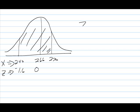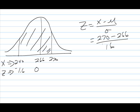So we do need this Z value for 270. So we need to take X minus mu over sigma, which is 270 minus 266 over 16. So when I work this out, I get .25.